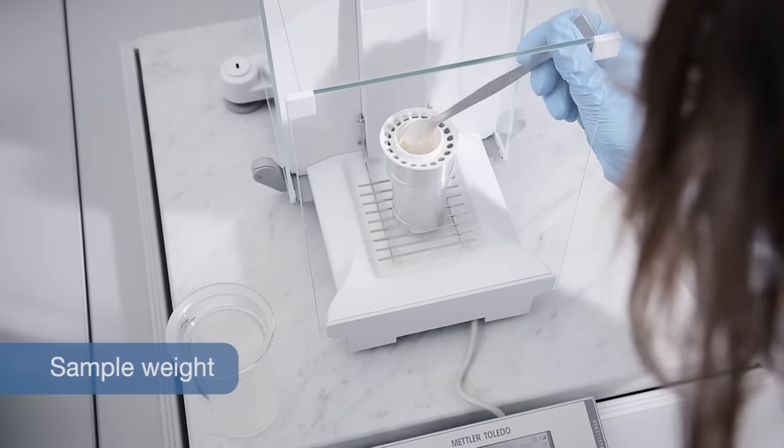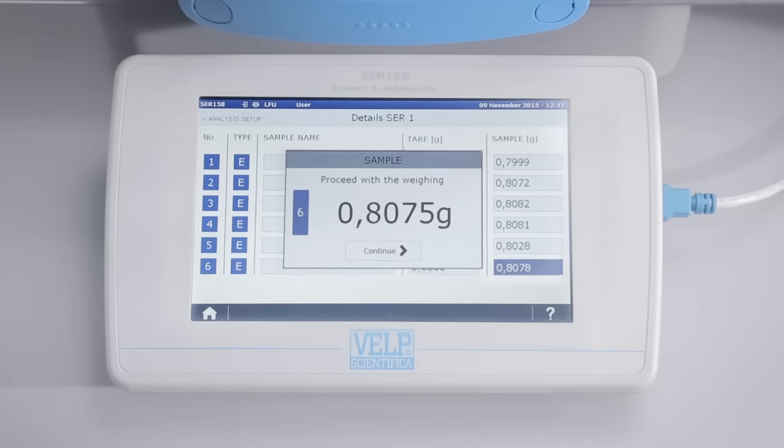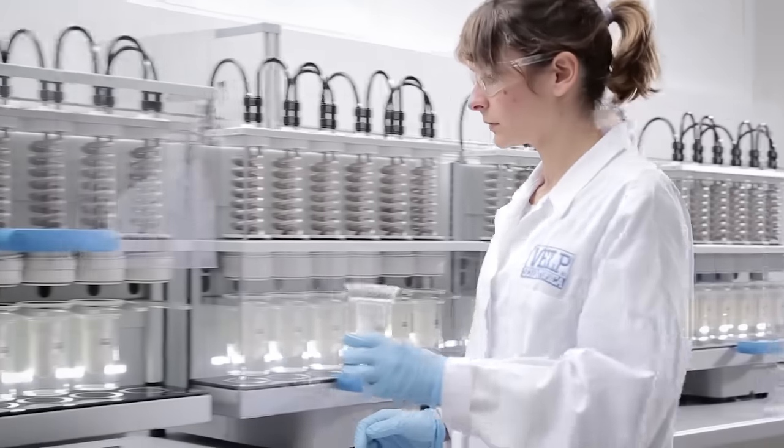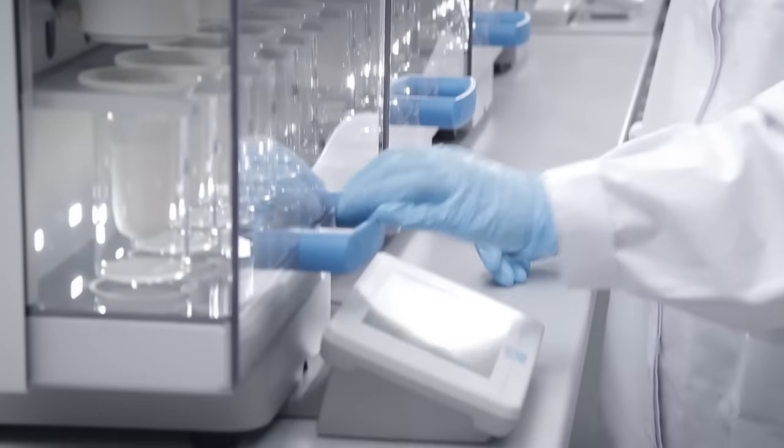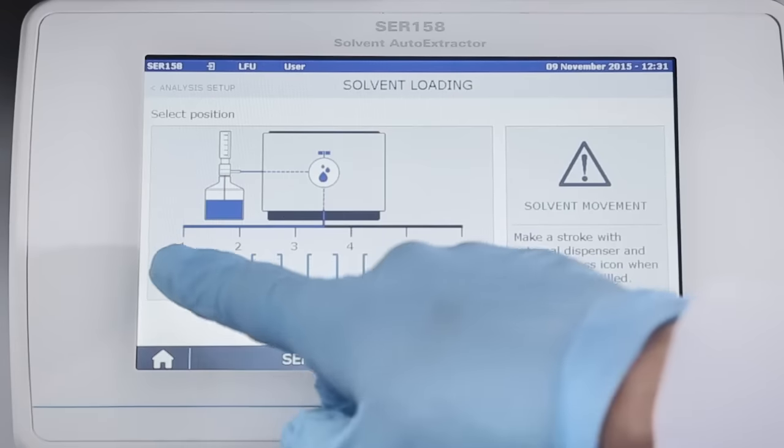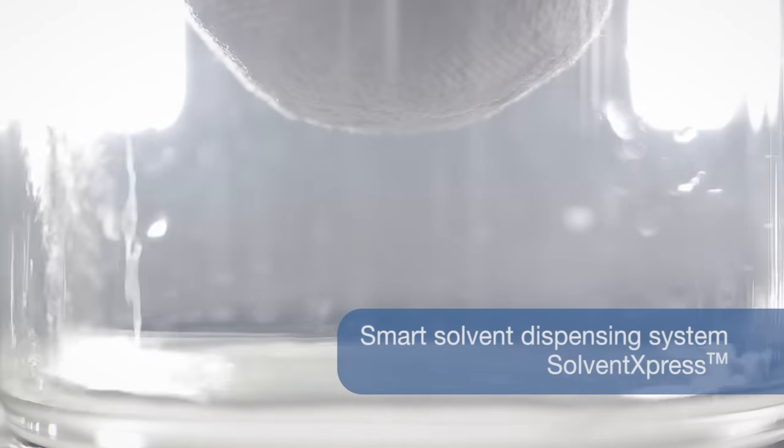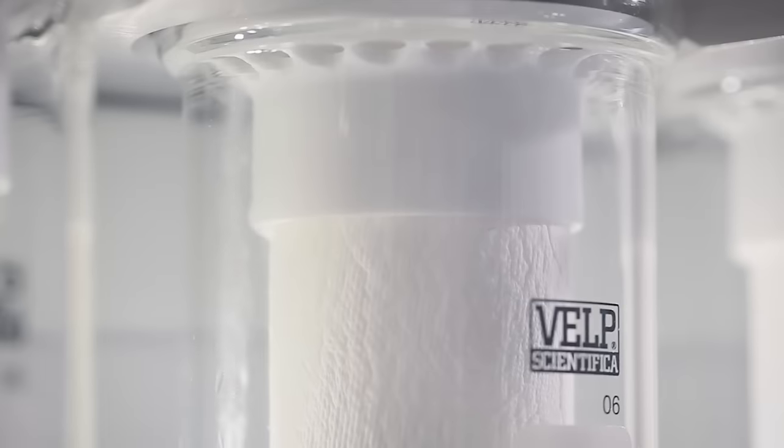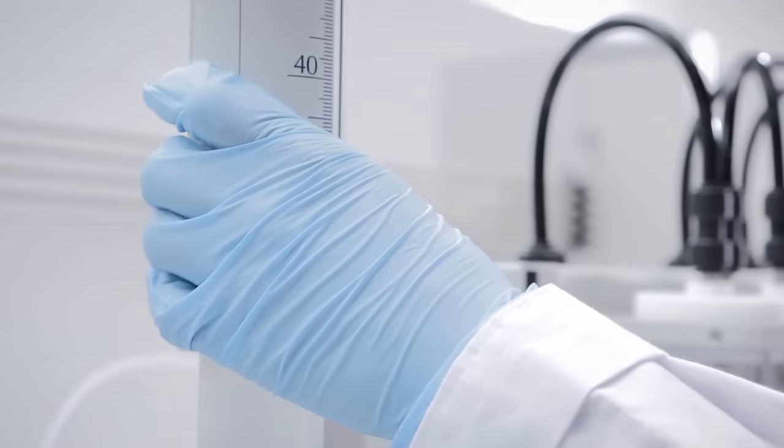Weigh the homogenized sample directly in the VELP extraction thimbles and select the positions required. Position the extraction thimbles, select the method and add the solvent. The automatic VELP solvent dispensing system, Solvent Express, minimizes exposure to the solvent, ensuring operator safety.